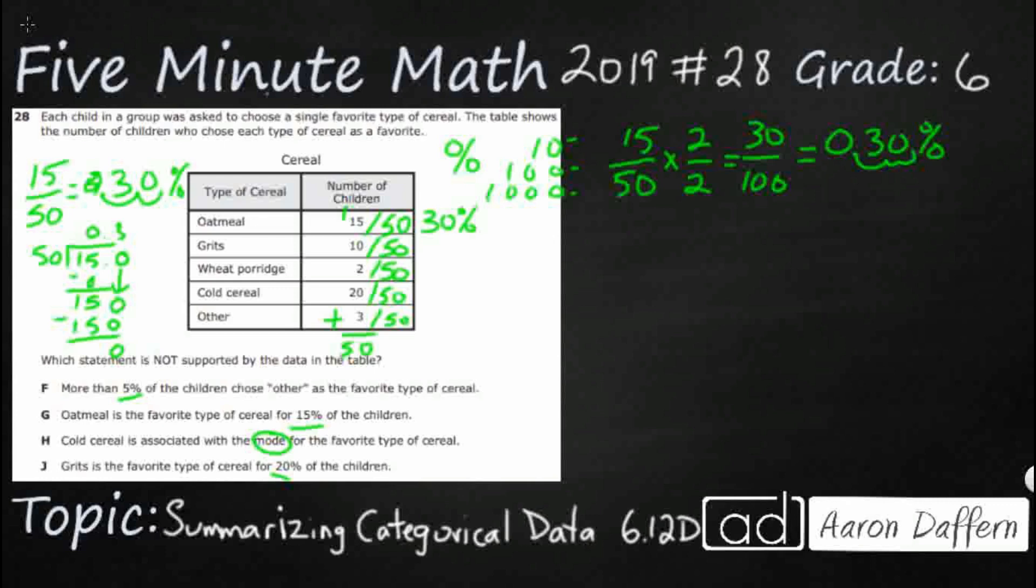So guess what? If my denominator is 50, I could just double the numerator. So that's going to save me a little bit of time. So that's 20%. This is 4%. 20%. Grits and cold cereal are the same. And let's see, 6%. Now, after all that work, I am ready to evaluate the answer selection.